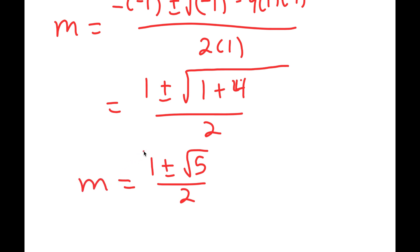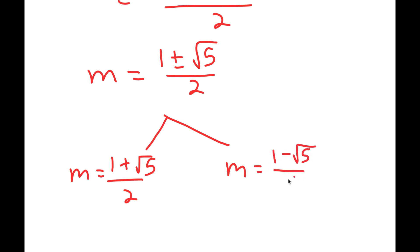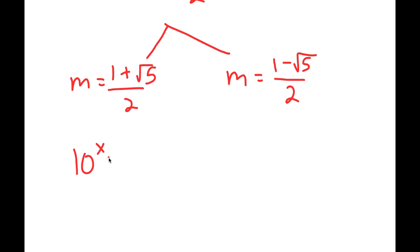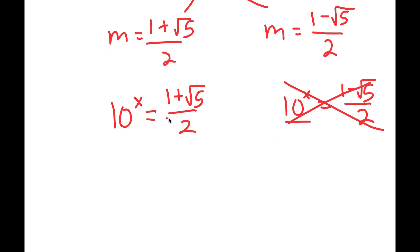So this is the value of m. To be precise, the two values of m are (1 plus the square root of 5) over 2, and (1 minus the square root of 5) over 2. Now, remember how we let m equal 10 to the power of x. So 10 to the power of x equals (1 plus the square root of 5) over 2, and 10 to the power of x also equals (1 minus the square root of 5) over 2. Well, (1 minus the square root of 5) over 2 is a negative number, and you can't take the power of a positive number and make it equal negative, meaning there's no solution to this equation. So we are only left with 10 to the power of x is equal to (1 plus the square root of 5) over 2.